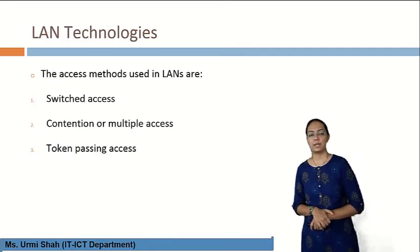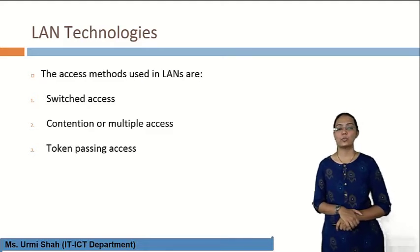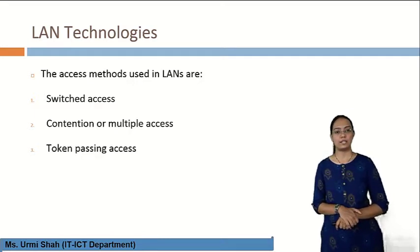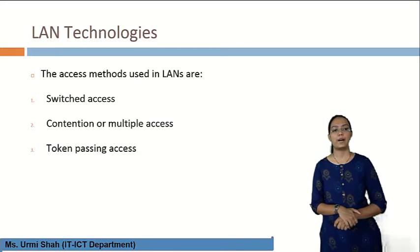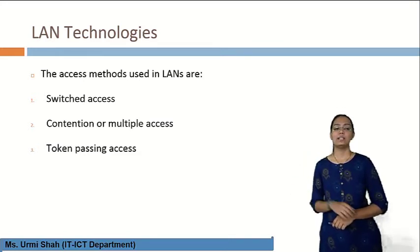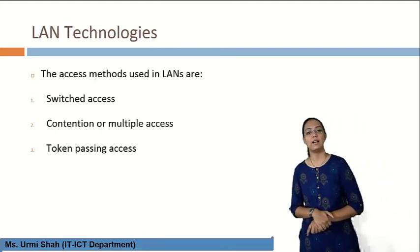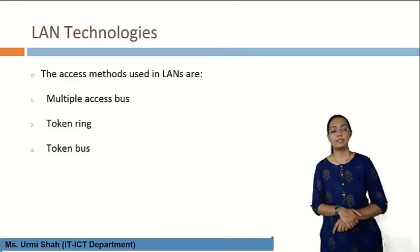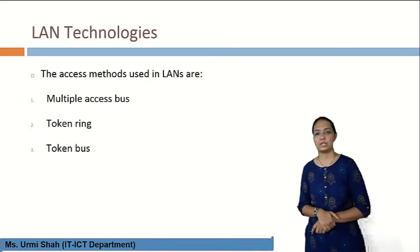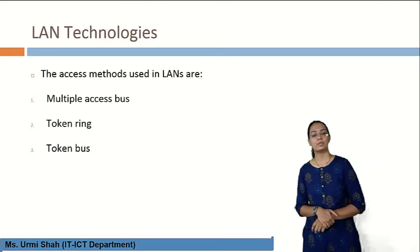Coming to the access methods used in LAN technologies: the first is switched access, the second is contention or multiple access, and the third is token passing access. These are the three different types of access methods used in local area networks. The access methods further used in LAN are multiple access bus, token ring, and token bus.